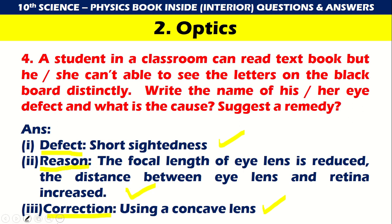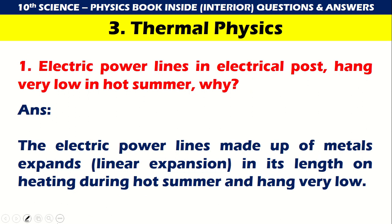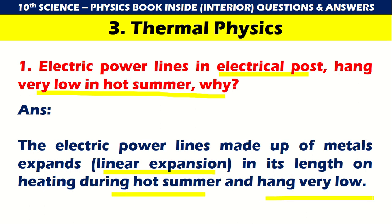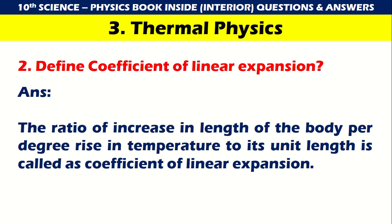Chapter 3: Thermodynamics. Electric power lines on electrical posts hang very low in hot summer. Why? The electric power lines made up of metals undergo linear expansion — an increase in length on heating during hot summer, causing them to hang very low. Define coefficient of linear expansion: it is the ratio of increase in length of the body per degree rise in temperature to its original unit length.